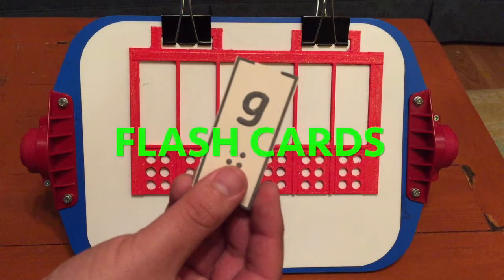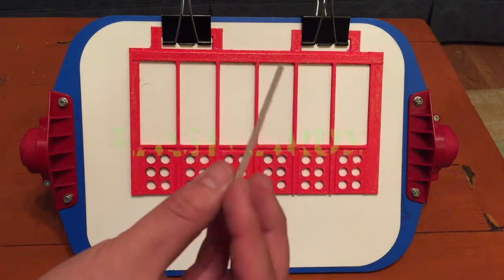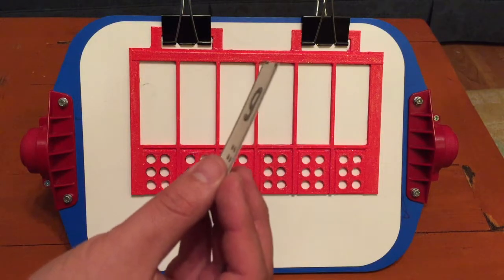We use printed flash cards cut to the same dimensions as the boxes, which include the printed letter along with the Braille dots.